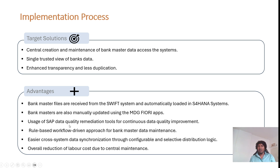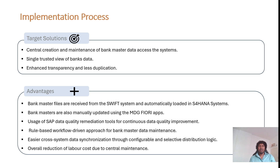The benefits of the central bank master maintenance process include: bank master data received from external systems is automatically loaded into the S4 system with less manual intervention; manual updates are still possible via Fiori apps or change request process; if using MDG you can use a DKM tool for mass processing; rule-based workflows are available in the change request process; DRF allows selective replication to different systems; and overall labor costs are reduced since fewer people need training across multiple systems.